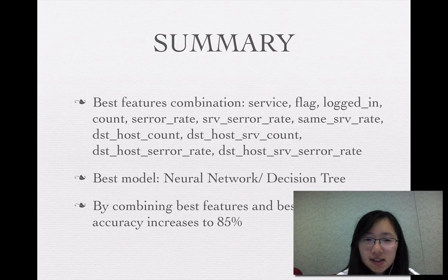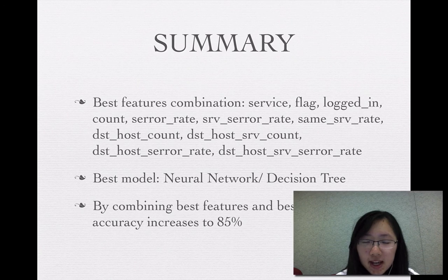Finally, we can summarize that the best features combination is as follows. And also, the best model is neural network and decision tree. So by combining best features and best model, the accuracy increases to 85%.